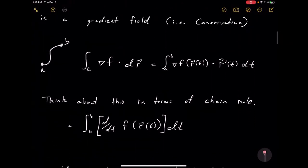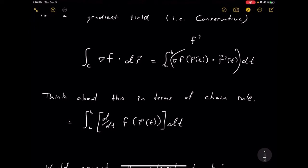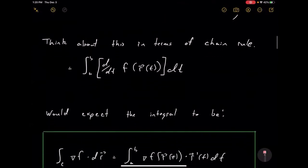Now think about this in terms of the chain rule. What is ∇f here? We have the gradient of f of R(t), and then R′(t). Think of the gradient as essentially a derivative. So think about this in terms of single variable functions — we essentially have f′(R(t)) times R′(t). That looks like chain rule, which means this is the derivative with respect to t of f(R(t)). So we're integrating a derivative, and it seems like we should have some result similar to the fundamental theorem of calculus.